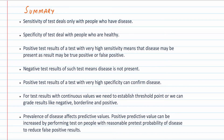In summary, sensitivity and specificity of a test are established by performing tests on people who are known to have the disease or are healthy, by comparing test results with a gold standard test. Once sensitivity and specificity are established, they remain the same. They can only be changed by changing the way the test is performed or by performing tests on a subset of patients.